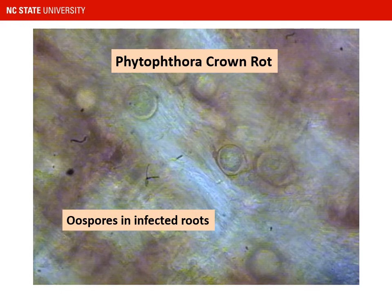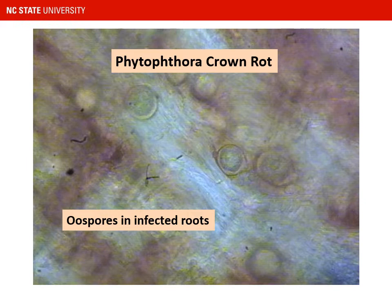If you have access to a microscope, you can get a definitive diagnosis of Phytophthora crown rot. Some county extension offices have microscopes where you can place a piece of root on a slide, crush it under a cover slip, and if Phytophthora is present you'll often see oospores inside the root. This microscopic view shows cells inside a strawberry root with round, double-walled, thick-walled spores called oospores, which are distinctive for Phytophthora and related organisms. If you see that inside the roots, you can be pretty confident you're seeing Phytophthora root or crown rot.